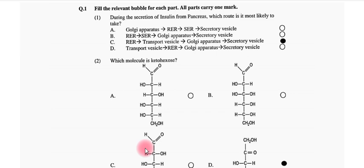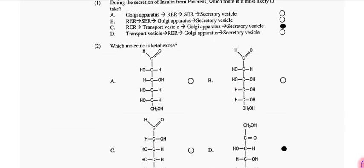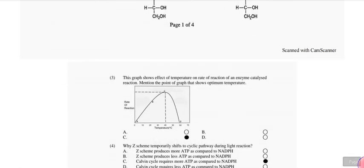First MCQ: During segregation of insulin from pancreas, which route is most likely? That is RER, transcript, transport vesicle, then Golgi apparatus, then secretory vesicle. So C option is the right one. Next, which molecule is ketohexose? Fructose metabolized on 2nd carbon. That is ketohexose. So option D is the right one.